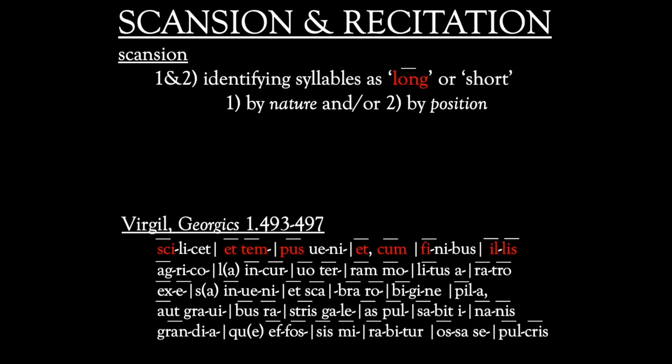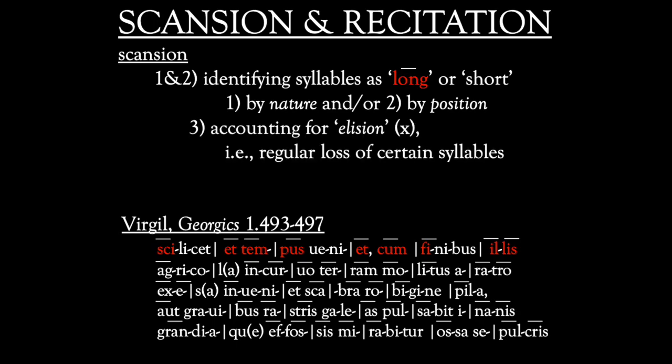To make long syllables a bit more obvious, on this slide every long syllable in the first line of the passage is marked in red. By implicit contrast, every not-red syllable in that line is scanned as short. Once the first and second steps have been taken, the third step is to account for what's called elision — that is, the loss of syllables under certain predictable conditions. The lost syllables are said to be elided or dropped out.